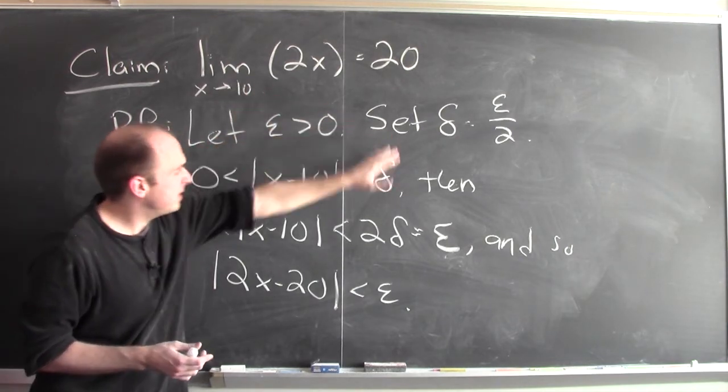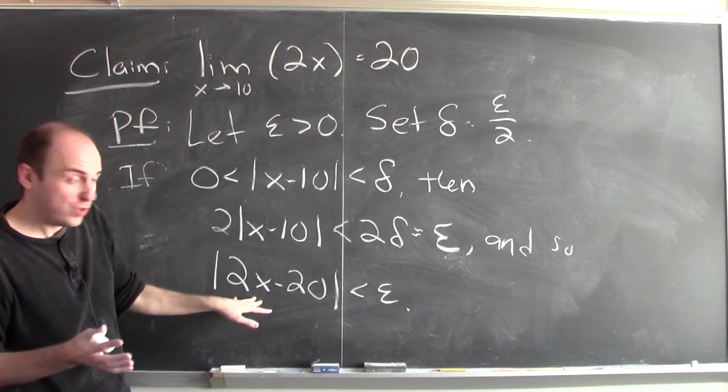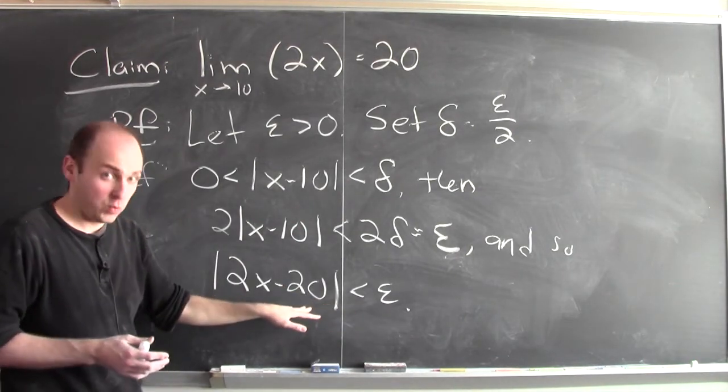For every epsilon, there's some delta, so that whenever x is within delta of 10, then the function 2x is within epsilon of 20.